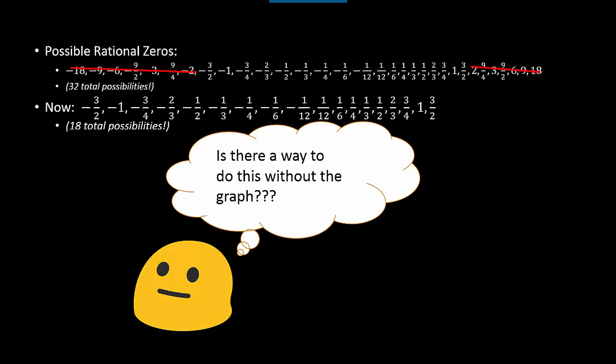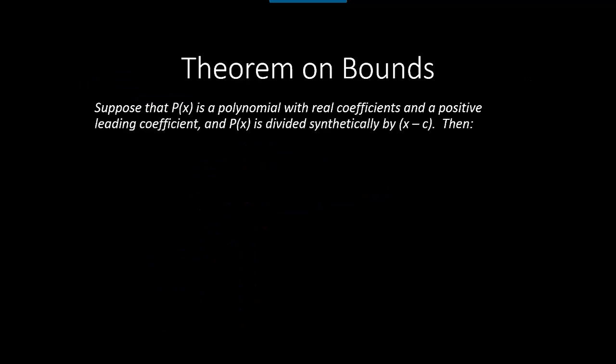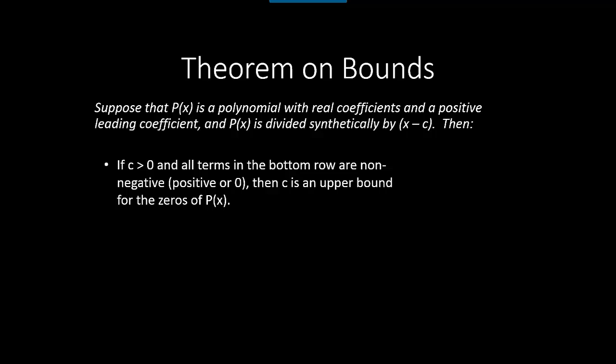You might not have a graphing calculator or access to a website during an exam, so the question is: is there a way to do this without looking at the graph? The answer is yes — this is the theorem on bounds. Suppose we have a polynomial with real coefficients and a positive leading coefficient, and we use synthetic division. If we divide by a positive value c and all numbers on the bottom row are non-negative, then c is an upper bound for the zeros.